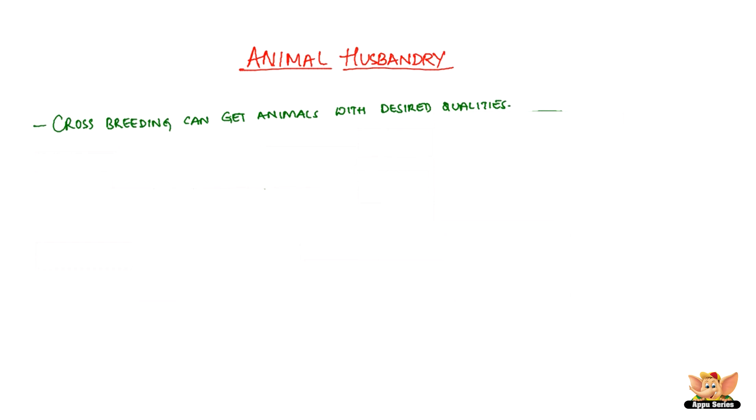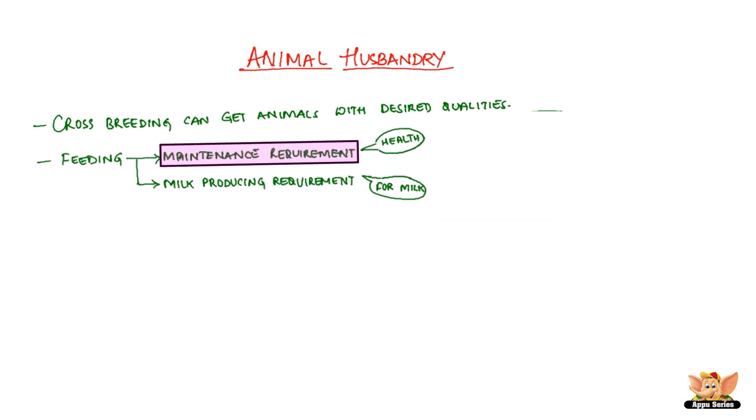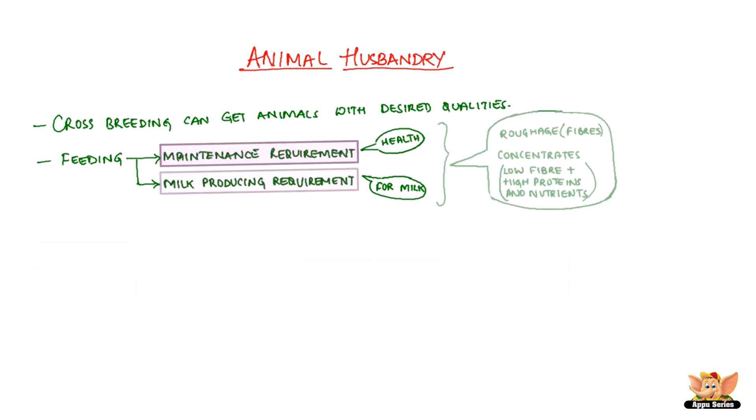Food requirements are of two types: maintenance requirement for animal health, and milk-producing requirement for milk production. The animal feed includes roughage, which has high fiber, and concentrates, which are low in fiber but have high proteins and nutrients.